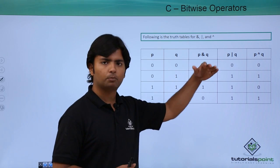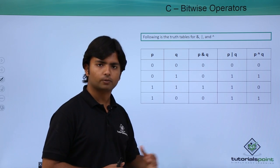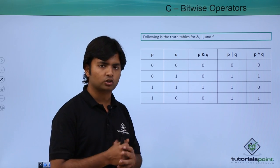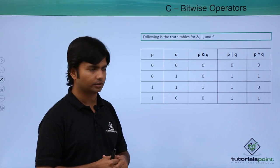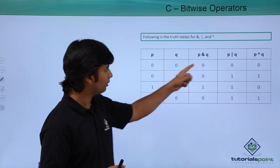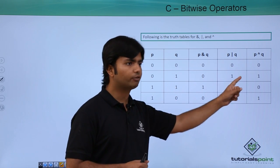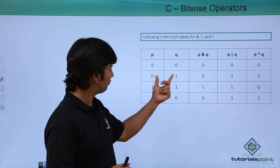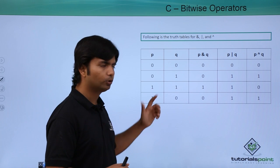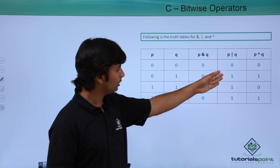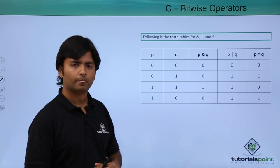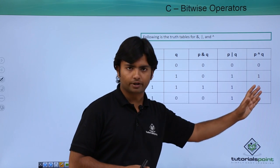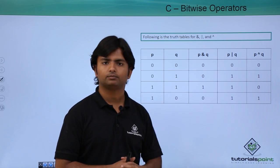Similarly, bitwise OR works the same as logical OR — it will return zero only when both bits are zero. If any one or both bits are one, it will return one. The last one is the XOR operator, which uses the caret symbol.